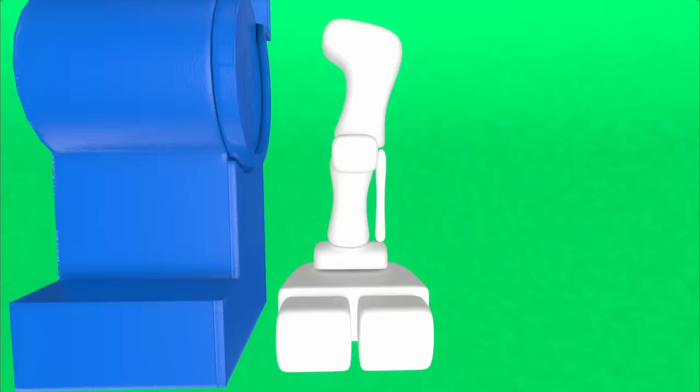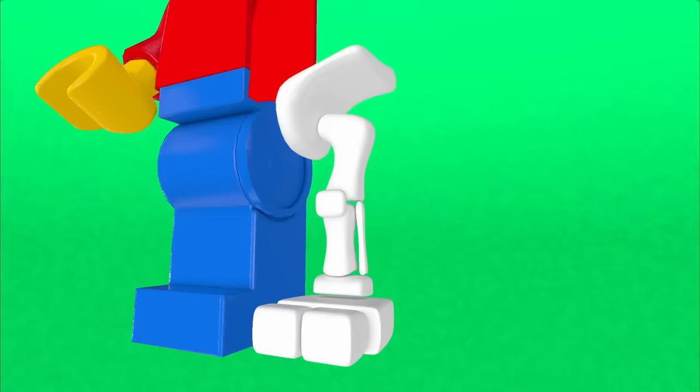Alright, and then we can top it all off with a little kneecap. Cool, so we have a full minifig bone leg now. Alright, and now we can quickly model a hip bone which will be used to connect the leg to the rest of the body later on.